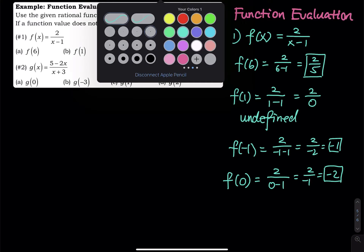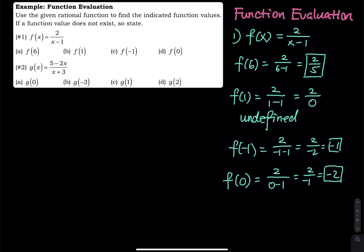Let's take a look at the second function. We have g of x — g is the name of the function. So g of x is 5 minus 2x divided by x plus 3.